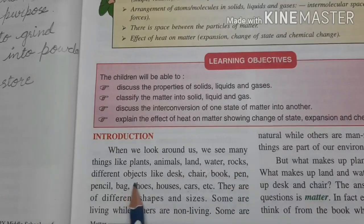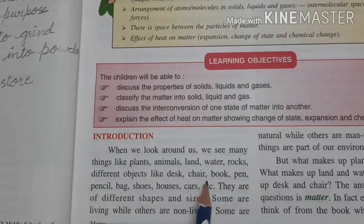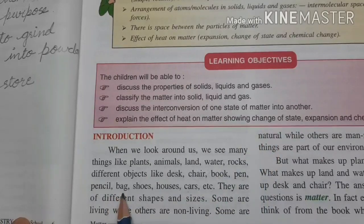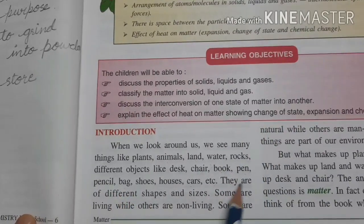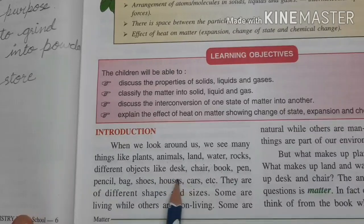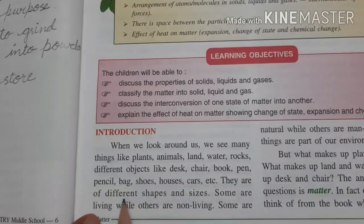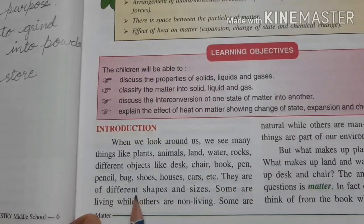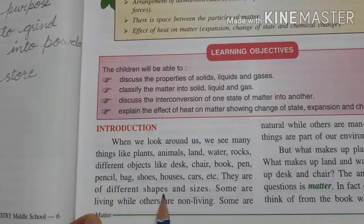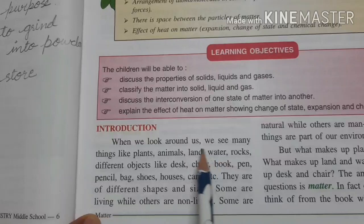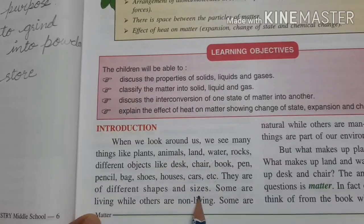Rocks, different objects like desk, chair that you are using, book that you are using, pen, pencil, bag, shoes — every single thing that you can see is called matter. They are of different shape and size, which you know very well. All of these examples have their shape and size.